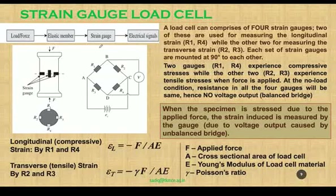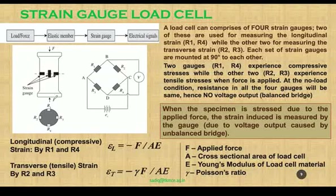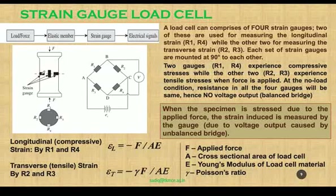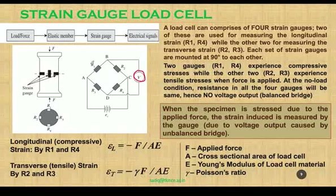In this session we discuss the strain gauge load cell used for sensing static load. A static load means the applied force does not vary appreciably with respect to time. In this strain gauge load cell there is a force element — force is applied on an elastic member, causing strain. Strain gauges attached to the elastic member are part of a Wheatstone bridge. With no load, the bridge is balanced and there is no voltage output. When load is applied, the strain gauges become unbalanced, producing a voltage that indicates the applied force.